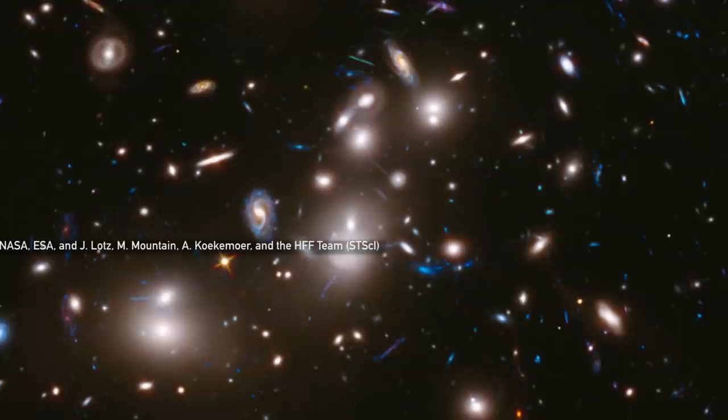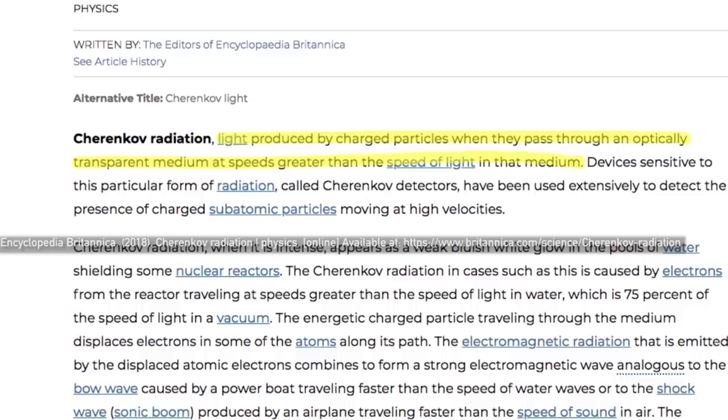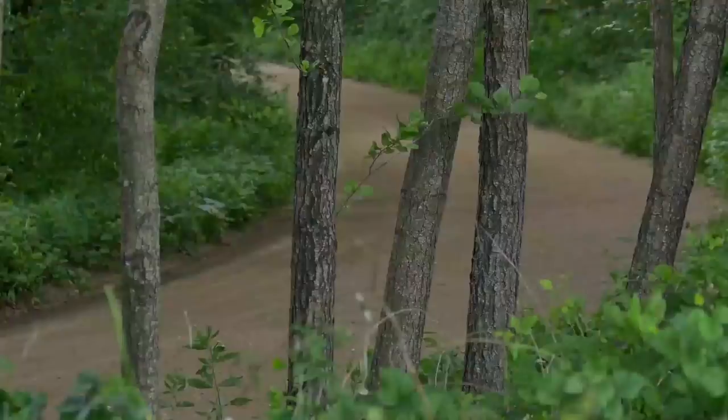That being said, not everything is beholden to this universal limit. The Cherenkov effect allows electrons to travel faster than light through certain media. The universe is also expanding faster than the speed of light right now. The sentence, nothing can travel faster than light, can therefore be taken in two ways. No thing can travel faster than light.